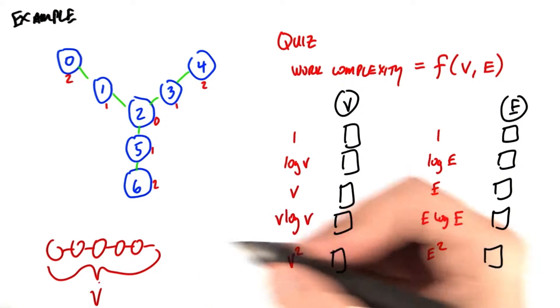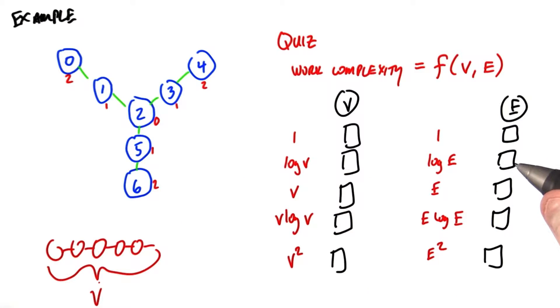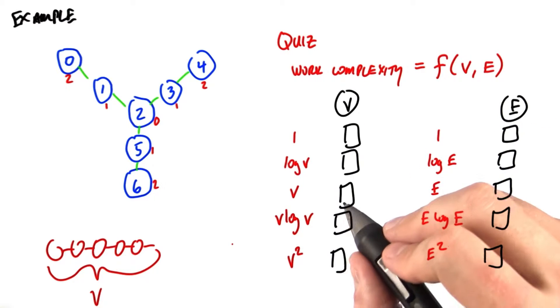How many iterations is that going to have? It's going to have on the order of v iterations because we're going to have v vertices here.